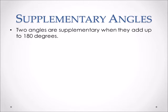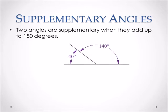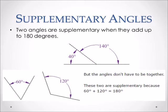Supplementary angles add up to 180 degrees — it is two angles together that add to 180. So in this case, we have 40 degrees and 140 degrees; together, when you add them, it equals 180 degrees. The angles do not have to be next to each other. So 60 degrees and 120 degrees can also be considered supplementary, since they add up to 180 degrees.